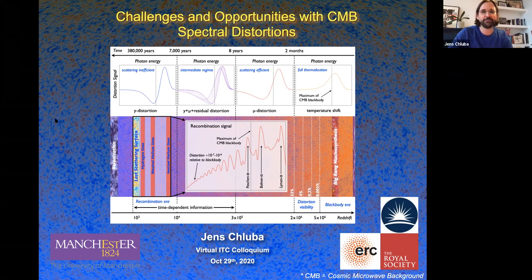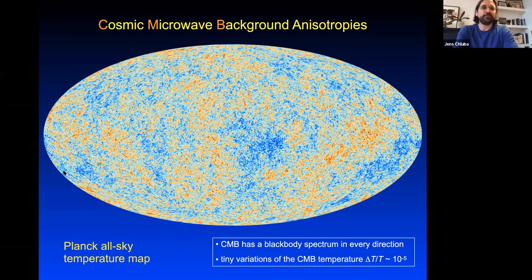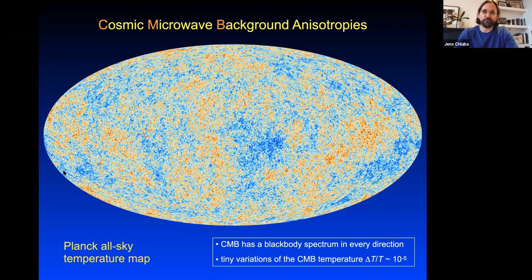I'm going to try to excite you about spectral distortions. Let's start with the CMB anisotropies and temperature — the tiny fluctuations measured by the Planck satellite, which have told us a great deal about cosmology. Here's a summary of the cosmological standard model: we have a Lambda CDM cosmology that is preferred with extremely high precision in its parameters. We have good understanding of both the early phases and late stages of the universe, coming from CMB measurements, supernova data, and large-scale structure.